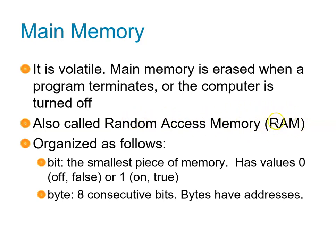Main memory is organized as follows. It has a bunch of bits — a bit is the smallest unit that can be represented in a computer, just a 1 or a 0. When you put 8 bits together, we call it a byte. If I have 8 consecutive bits, that's 1 byte.